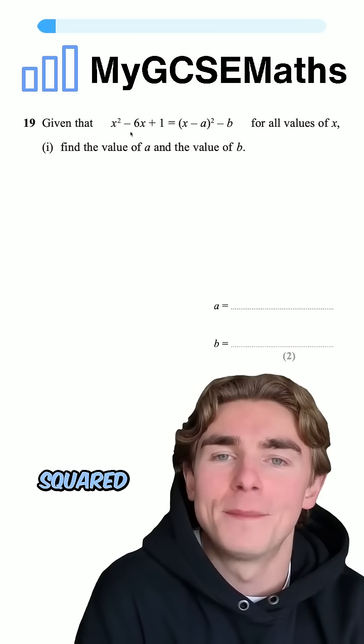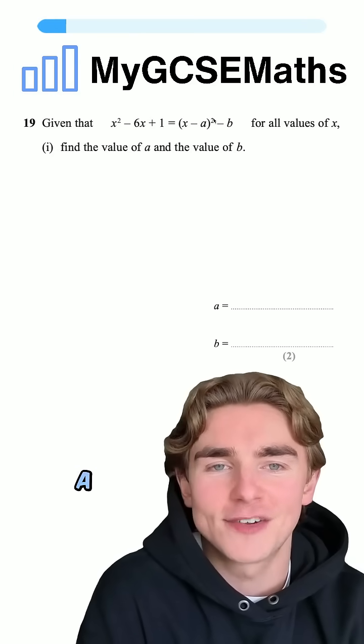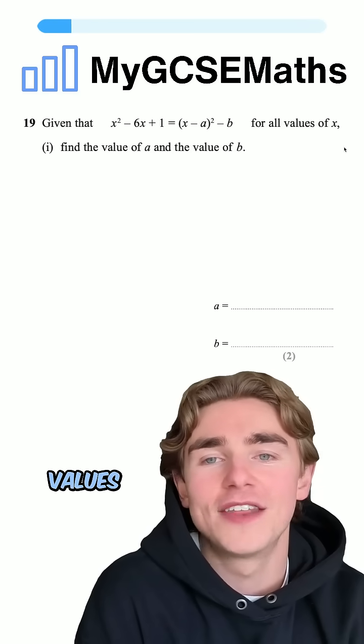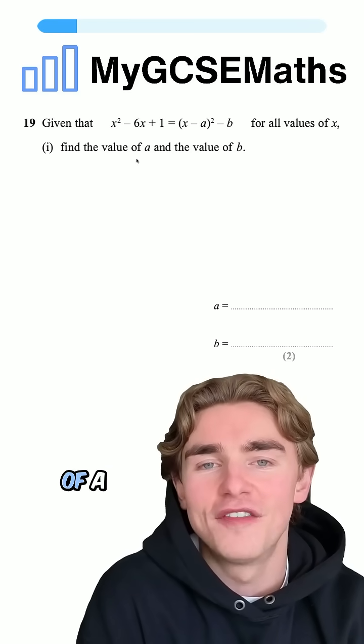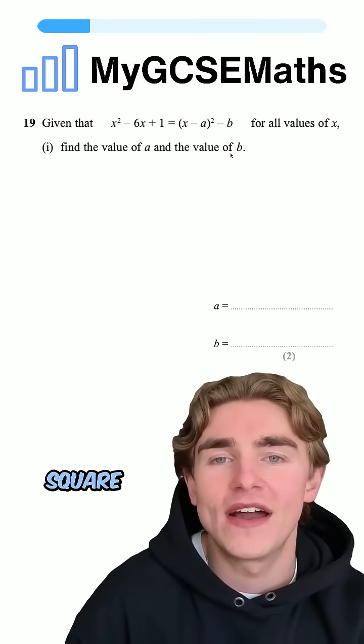The question says, given that x squared minus 6x plus 1 is equal to x minus a squared minus b, for all values of x, find the value of a and the value of b. How do we know that this is a completing the square question?